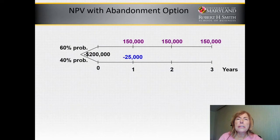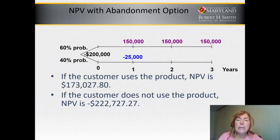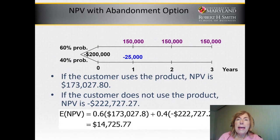Notice the cash flows on the top line are like they were before. But on the bottom line, the cash flows stop after year one, since we will abandon the project if it results in negative cash flows. Hence, the expected NPV works out to be negative $222,727 if they don't use the project, because they spent $200,000 at time zero and are getting negative $25,000. But if they do proceed, we get $173,000.